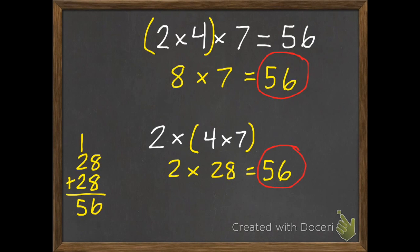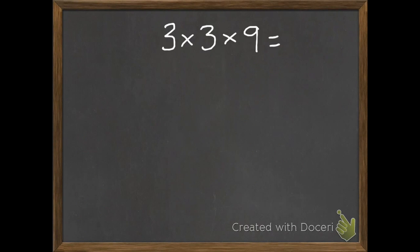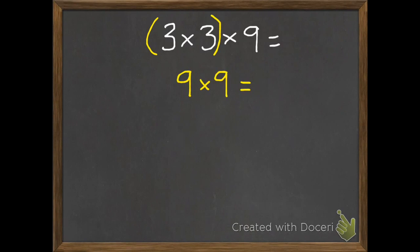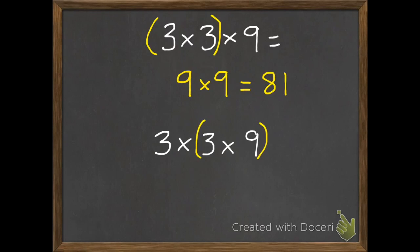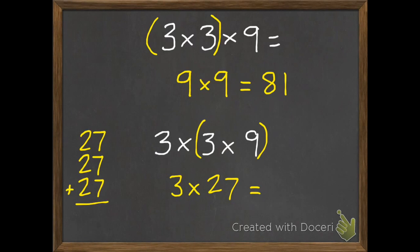Here's my second example: 3 times 3 times 9. I'm going to group the first two — the 3 times 3 — together. 3 times 3 is 9, I still have times 9, and I know 9 times 9 equals 81. If you grouped them the second way, you would do 3 times 9 first, which is 27, and then still multiply that by 3. Using repeated addition, 3 sevens is 21 and then 4 twos is 8, so no matter how we group them, our product is still 81.